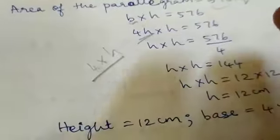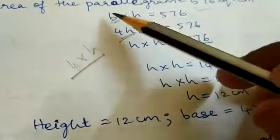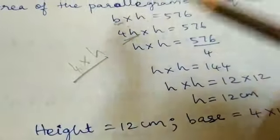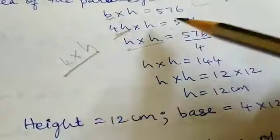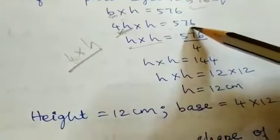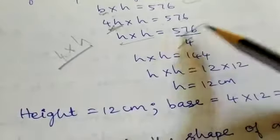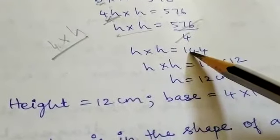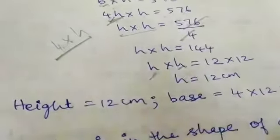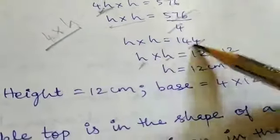If you substitute B, the value of B is 4H. So 4H into H equals 576. Then H into H, which is H squared, times 4 equals 576. So 4H² equals 576, which means H² equals 144.